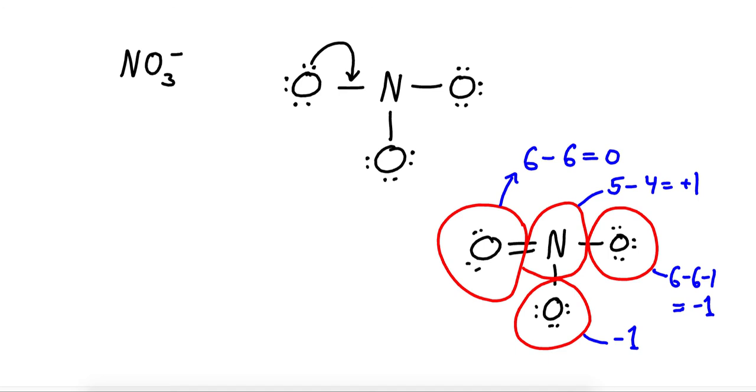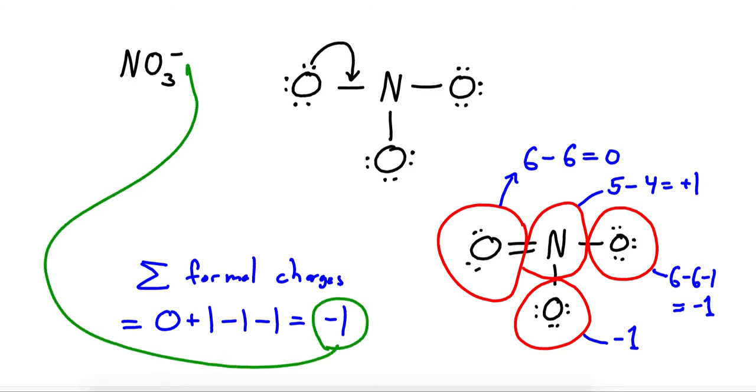So if we add up the formal charges, we're going to use this, remember this sigma just means sum. So we sum up the formal charges and that is going to be equal to zero plus one minus one minus one. And it all comes out to be minus one. And indeed, once we see this minus one, we're pleased because that is the charge on the ion.